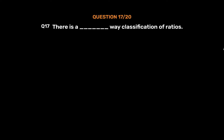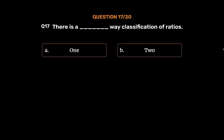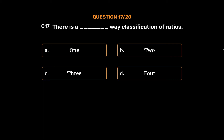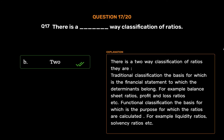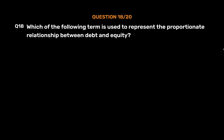Question number 17. There is a how-many-way classification of ratios? The correct answer is Option B: 2. There is a two-way classification of ratios. The first is traditional classification, based on the financial statement to which the determinants belong, such as balance sheet ratios and profit and loss ratios. The second is functional classification, based on the purpose for which the ratios are calculated, such as liquidity ratios and solvency ratios.